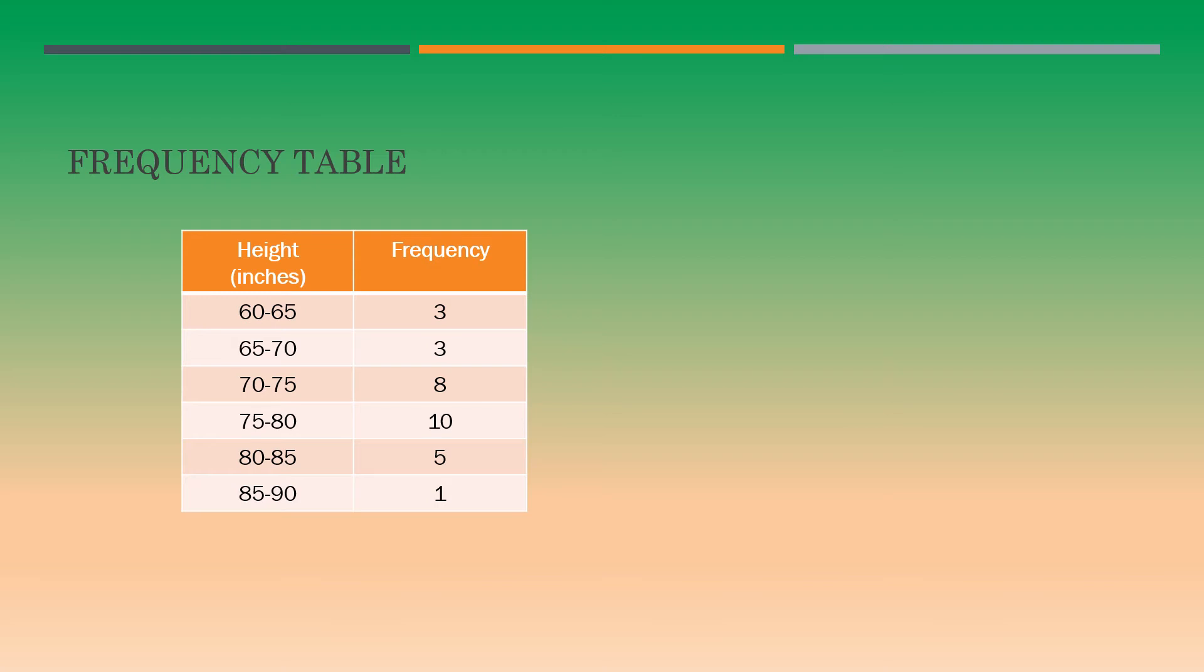Sometimes it will be a little confusing because we would like to know whether 65 belongs to the first class interval or the second interval. But usually, it is customary to say that each interval does not include the right-hand point. In other words, 65 is not included in the first interval, whereas 65 is included in the second one. By convention, we say that each interval does not include the right-hand point.